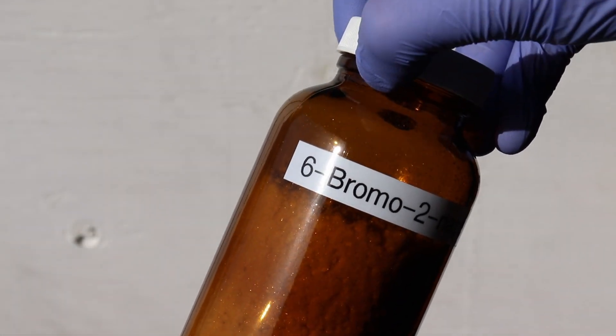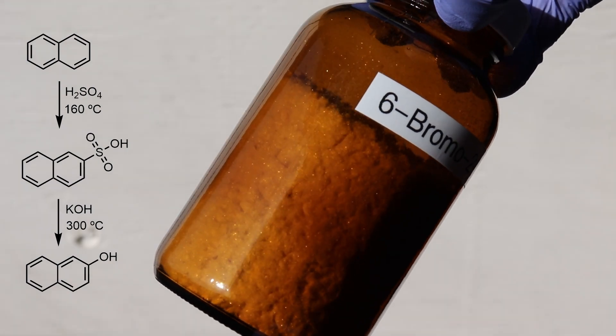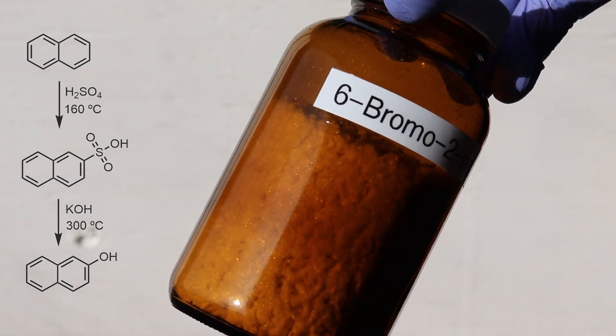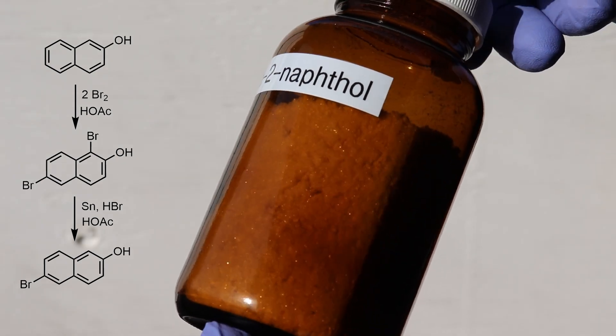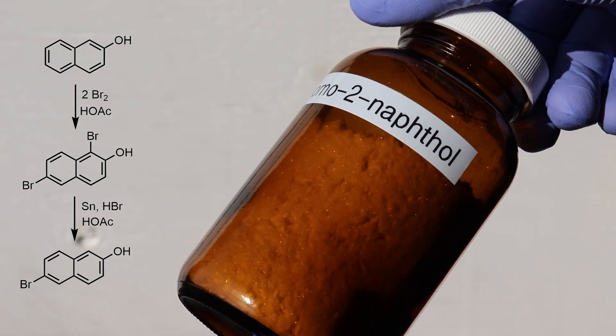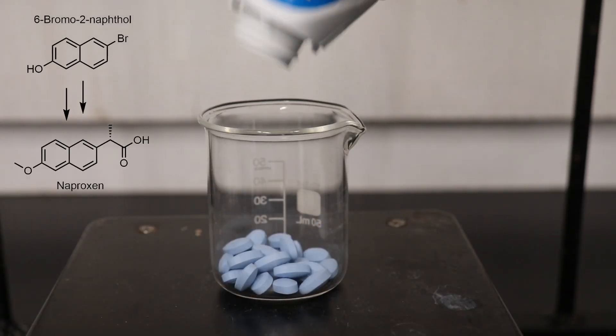In a previous video, I demonstrated the synthesis of 2-naphthol starting from naphthalene. In this video, I'll demonstrate the bromination of that product to form 6-bromo-2-naphthol, which is required for the synthesis of the non-steroidal anti-inflammatory compound naproxen, also known by the brand name Aleve.